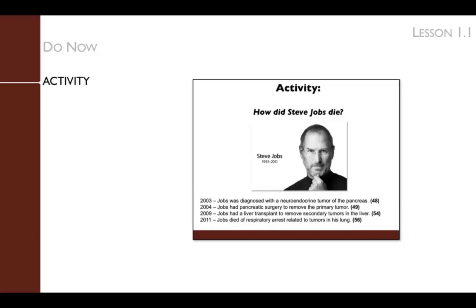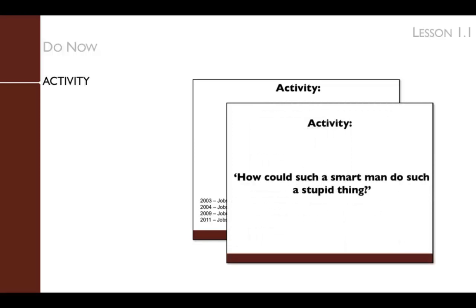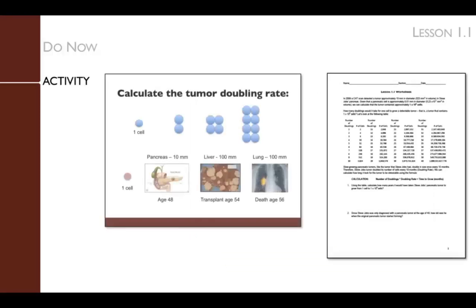Next, we review a timeline of Jobs' diagnoses and treatments. Students will discuss the question the interviewer asks regarding the nine-month delay in treatment, and should provide their opinions on whether Jobs' decision to delay treatment affected his life expectancy. The following slides accompany the lesson worksheet, which students will use to calculate when Steve Jobs' cancer originated. In normal tissue, the rate of cell division is about the same as the rate of cell death. But in tumors, more cells are growing than dying. Tumors can be detected when they are about 10 millimeters in diameter, but only start affecting organ function when they are about 100 millimeters in diameter, containing about 1 billion cells.